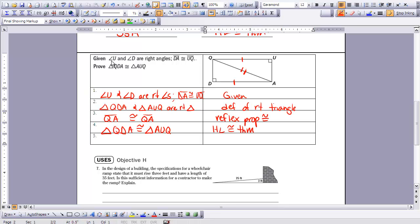So here we were given that angle U and angle D are right angles, and that DA is congruent to UQ. So I see the markings here. Write that on the given. Second line is to state that the two triangles are right triangles because of the definition of a right triangle. We have a common side in both triangles, so we can use the reflexive property to say QA is congruent to QA.